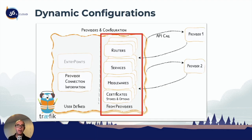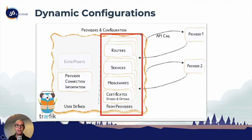Dynamic configurations, as you see in the diagram, are on the right hand side — they come from the providers themselves. The left hand side is the static configuration, which comes from Traefik itself, where we define Traefik configurations. The dynamic configuration is actually configuring the service that we're connecting to Traefik.